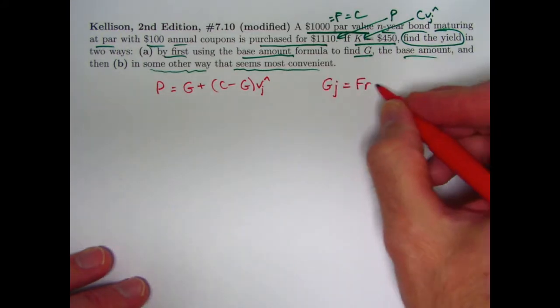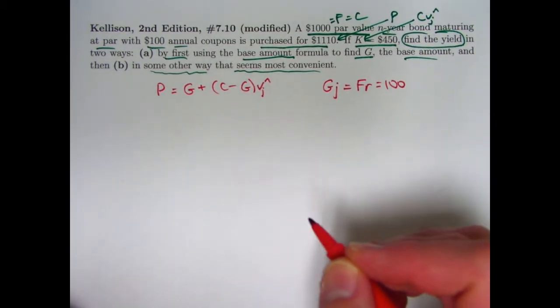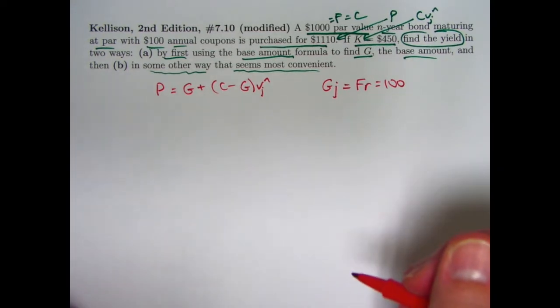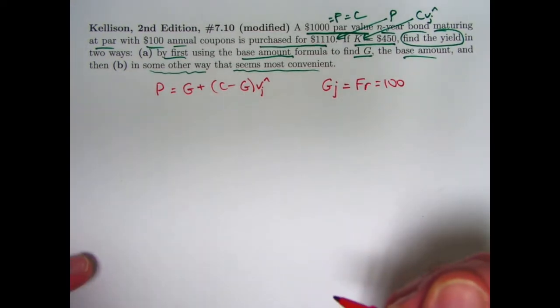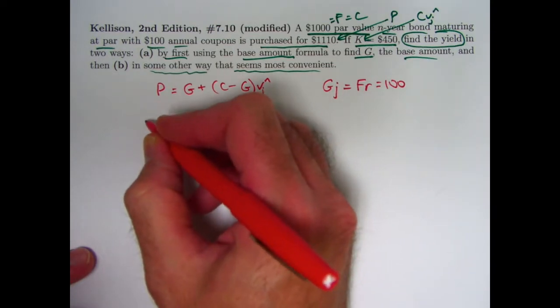So once we have capital G from this, then we'll be able to solve for J, the yield rate. It's a matter of just plugging and chugging here.